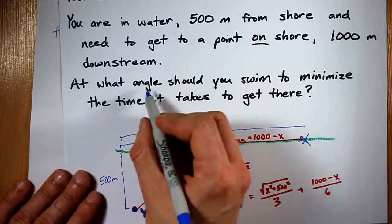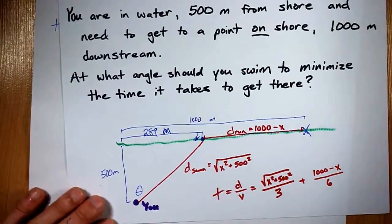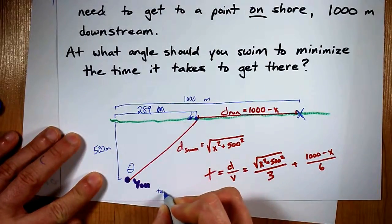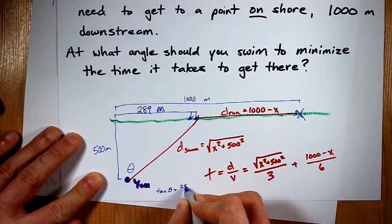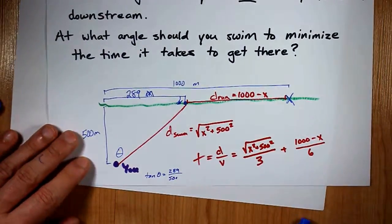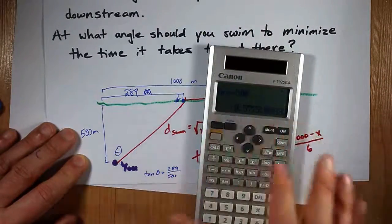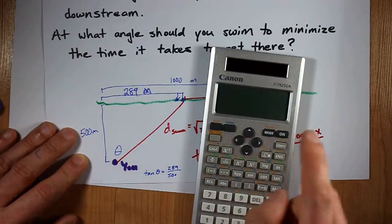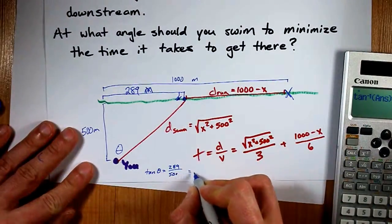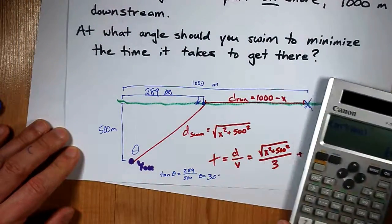Now the actual question here was, at what angle should you swim? You could solve for this angle theta, if you really wanted to answer the question explicitly. To solve for that, I would point out that tan theta is 289, that's opposite, over 500. That's adjacent. So this divided by 500, and then I'm going to tan inverse it. I'm personally going, oh, pi over 6, that's exactly 30 degrees. Well, that's weird.